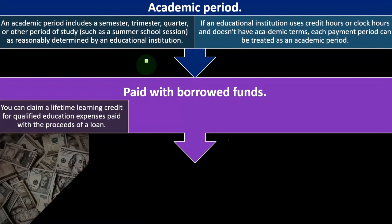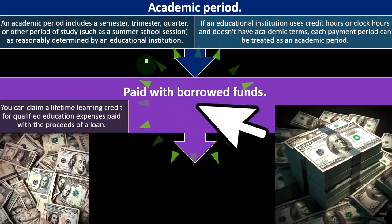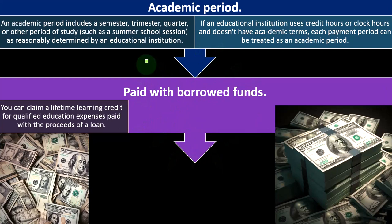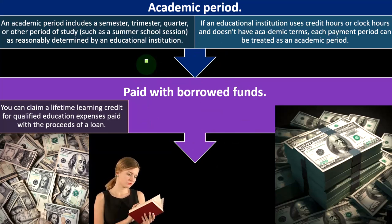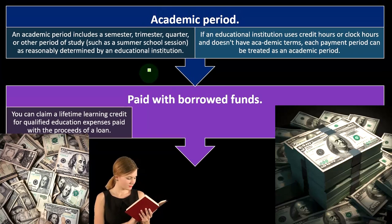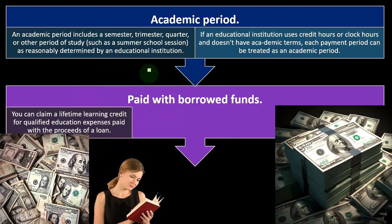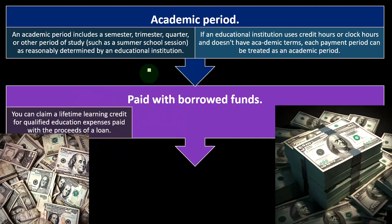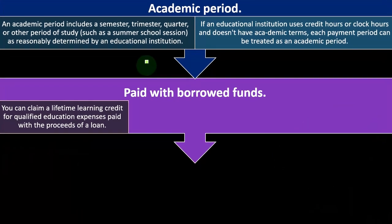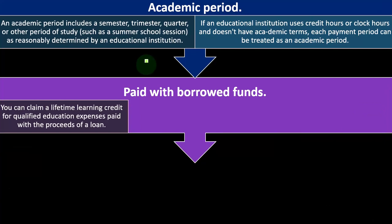You can claim a lifetime learning credit for qualified education expenses paid with the proceeds of a loan, similar to what we saw with the American Opportunity Credit. Remember the general idea: can you qualify for the American Opportunity Credit? If you can, it's usually more beneficial. Then we go to the lifetime learning credit, which is broader in the capacity to qualify. Although the expenses that may qualify for the lifetime learning credit might be more narrow — it's more likely you qualify for it, but possibly fewer expenses will be qualified.